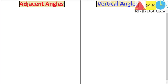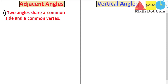So let's see what adjacent angles are. Adjacent angles are defined as two angles that share a common side, or you can say share a common arm and a common vertex. Keep in mind that adjacent angles exist as a pair of angles — we are talking about two angles, not one. So adjacent angles are the type of angles that exist in pairs.